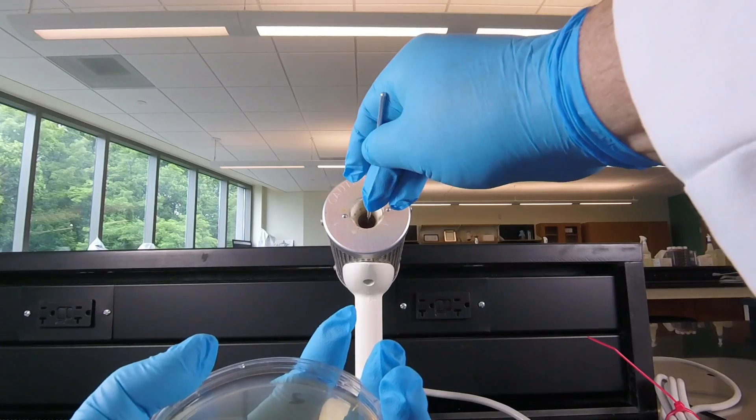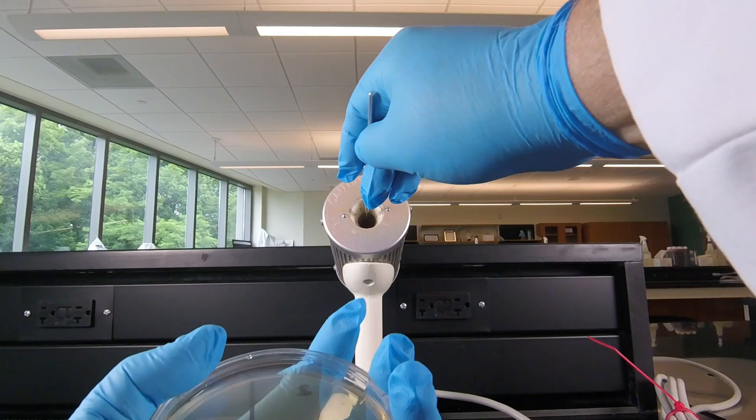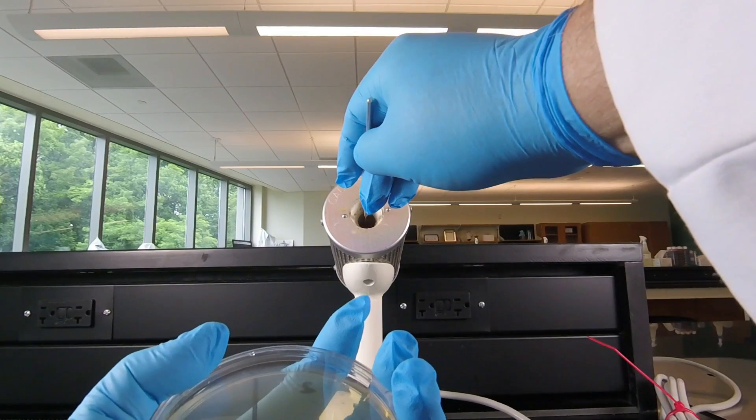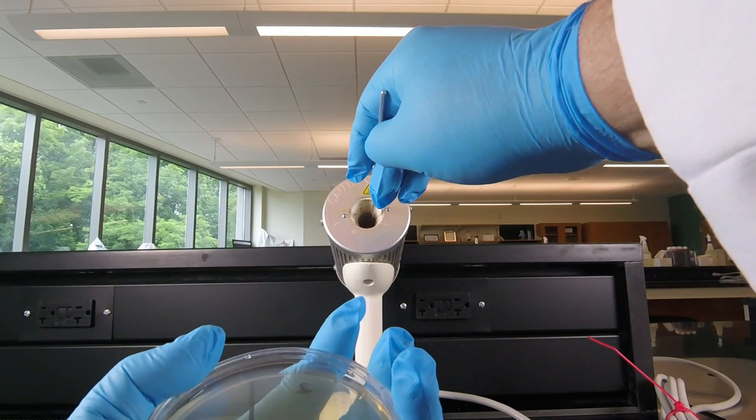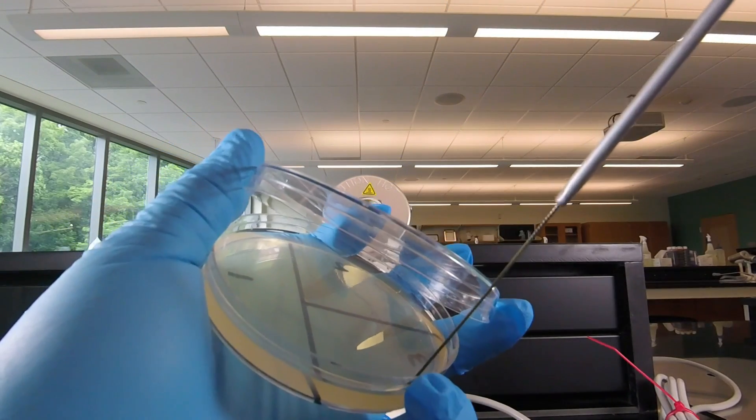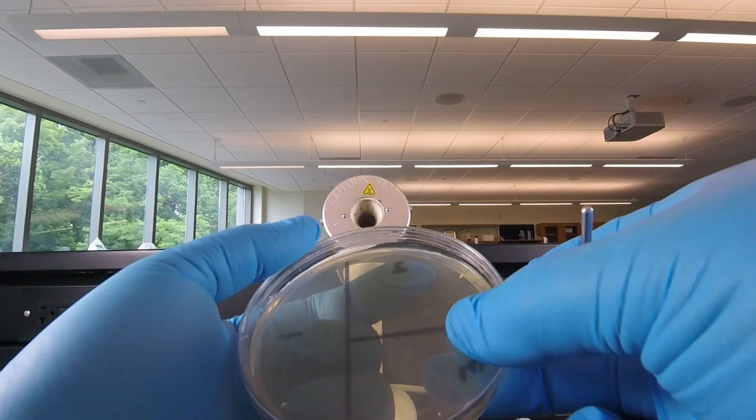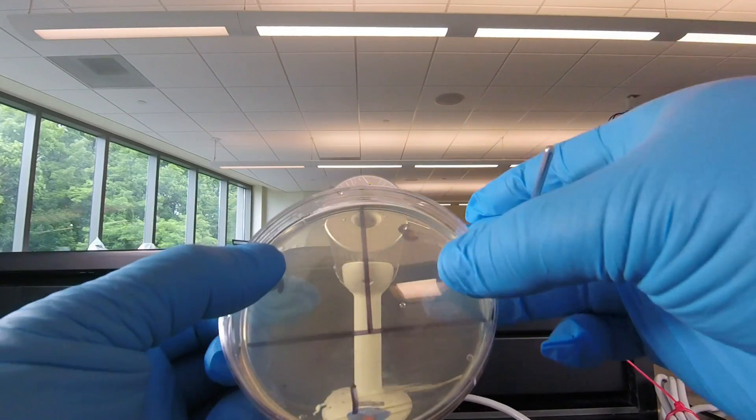Then we're going to sterilize the loop again, stick it in the agar to cool, rotate the plate so the bacteria that we just spread out on sector two is now sitting at nine o'clock.